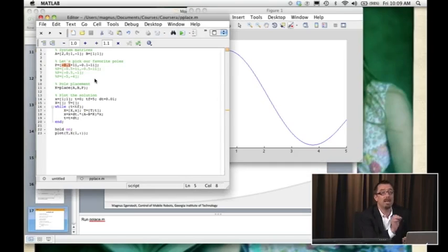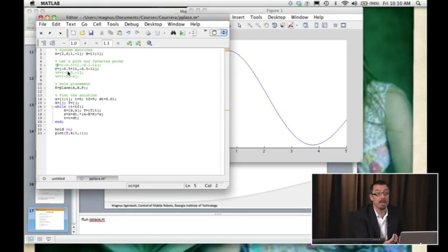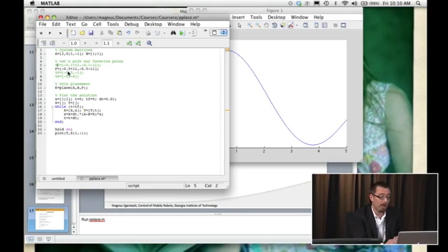The real parts here, minus 0.1, determine how quickly the system converges. If I use this P matrix with a larger negative real part, I should get an oscillatory response but faster.